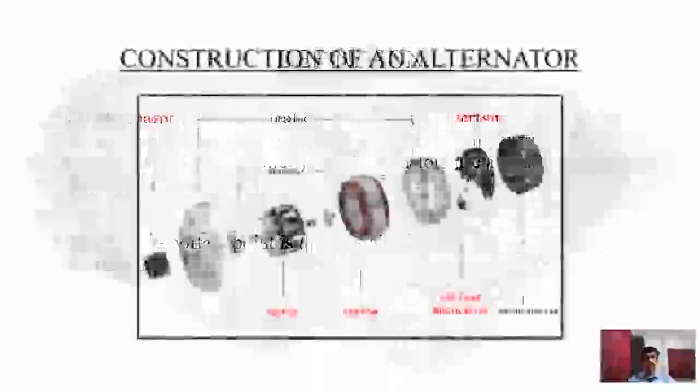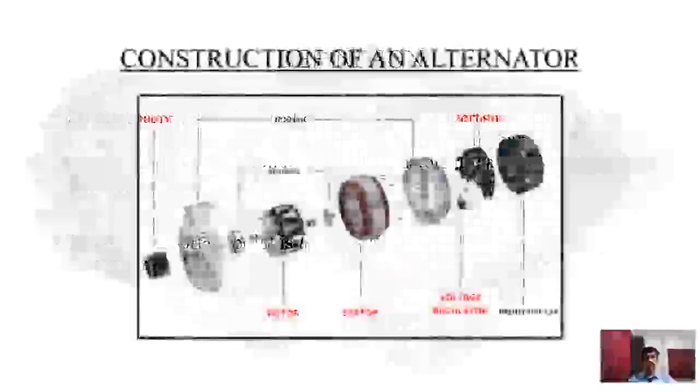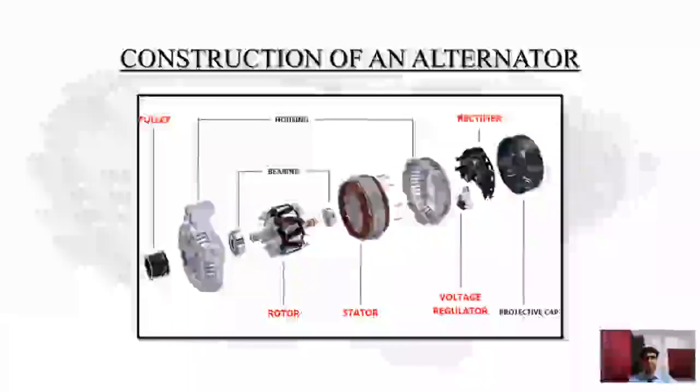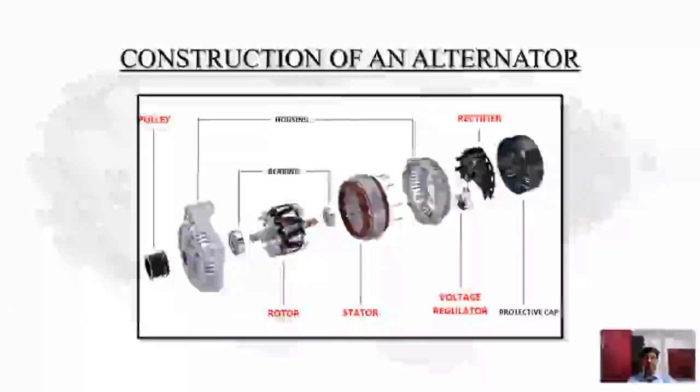The next slide we have the construction of alternator. Here I have provided you an image of an alternator. Here we can see different parts of an alternator: we can see a pulley, the housing, the bearings, rotor, stator, voltage regulator, rectifier, and protective cap. So all these parts make an alternator.